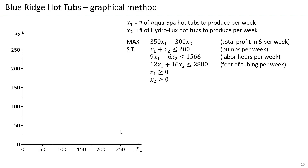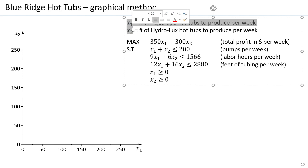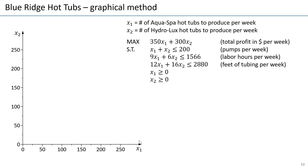The graphical method works only for two-variable decision problems. We actually have two variables, x1 and x2, so this is a good example to use. What I'm going to try and do is try to see which points are actually feasible for these constraints. Feasible means they satisfy all those constraints.